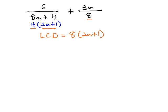We will then multiply each fraction by what it's missing. We already have 2a plus 1 in the first fraction, so we need to just multiply by 2 to get the 8 we want. 6 times 2 is 12, over 8, times 2a plus 1.